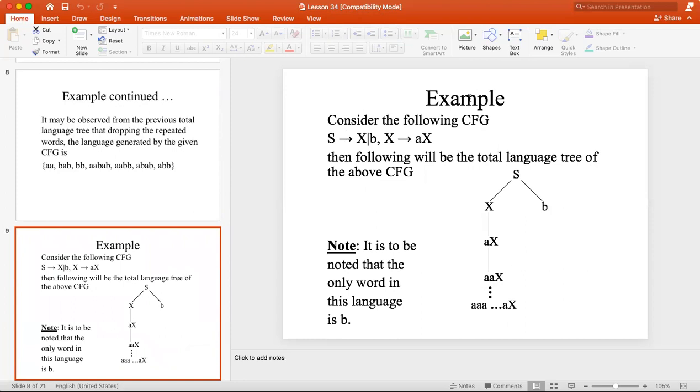So for example, S can be X and B. X can be AX. Then following will be the total language tree. What do you want to do with S? S can be X and S can be B.